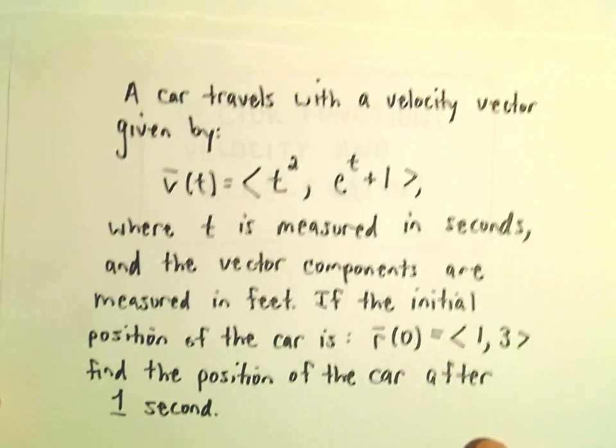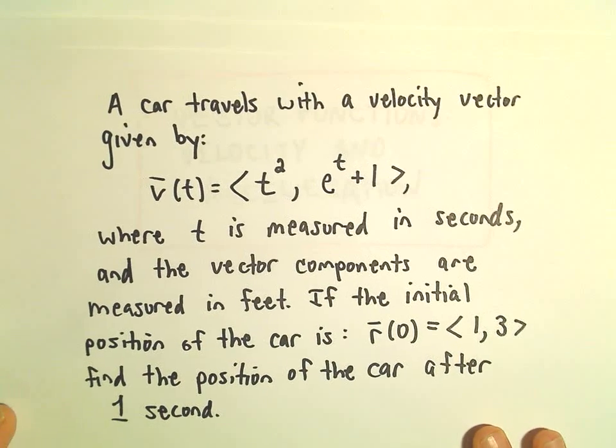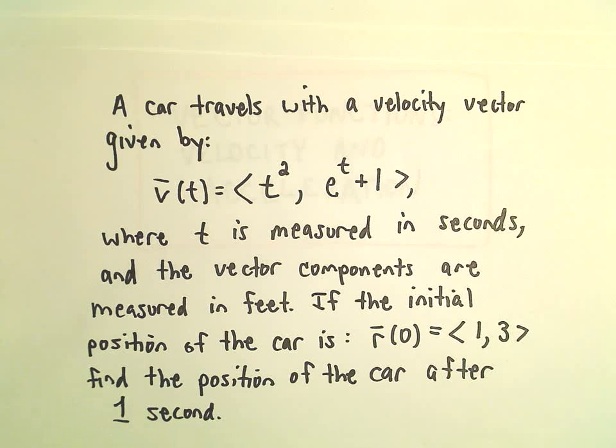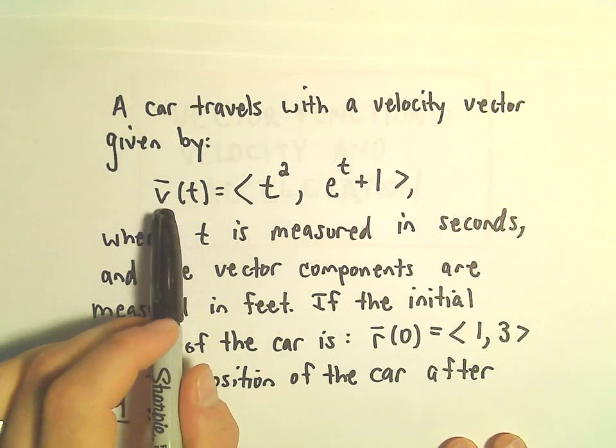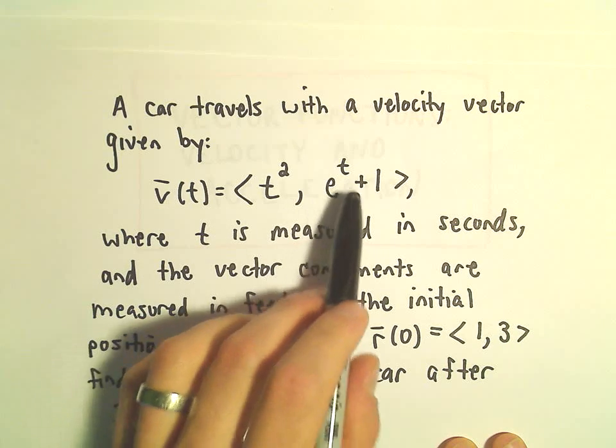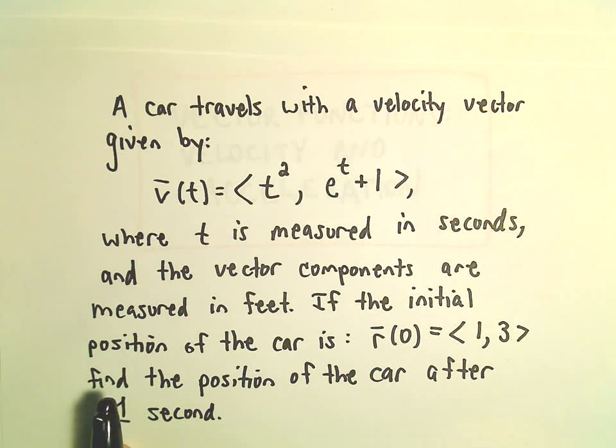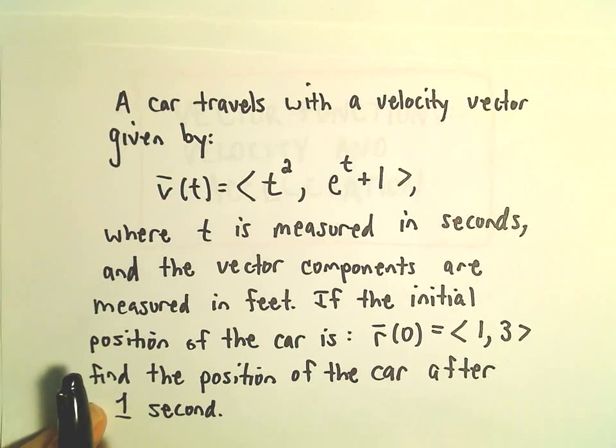Here we've got a question related to vector functions and velocity, acceleration, and position. We have a car that travels with a velocity vector given by v(t) = <t², e^(t+1)>. T is measured in seconds and the vector components are measured in feet.